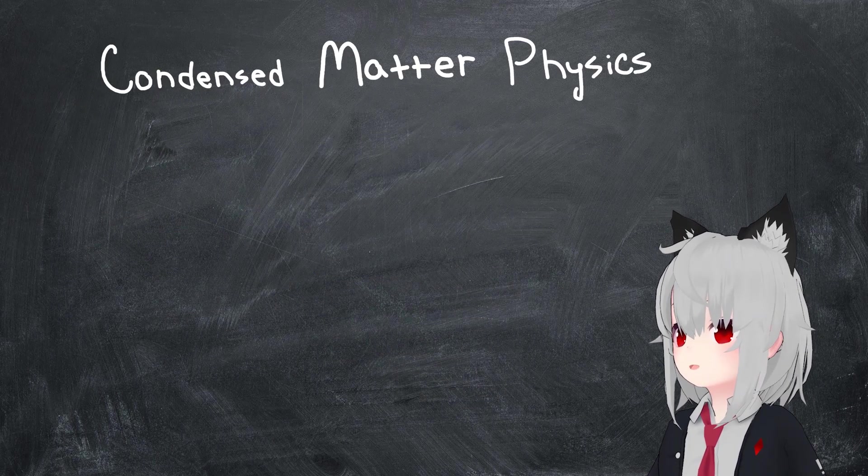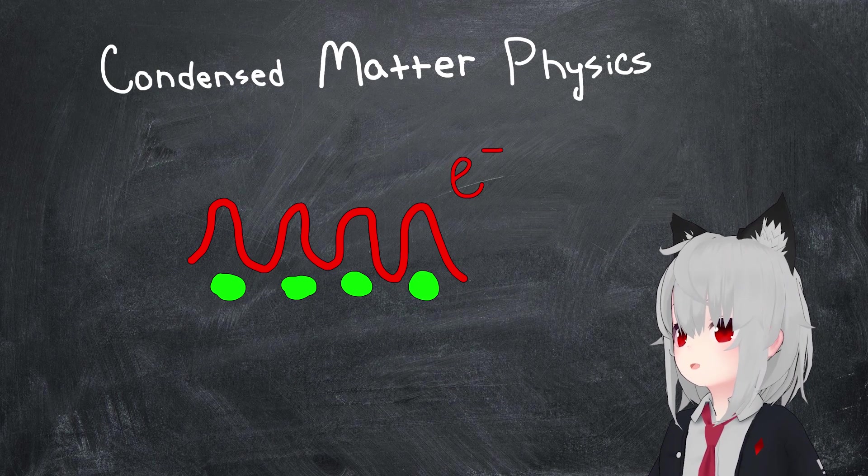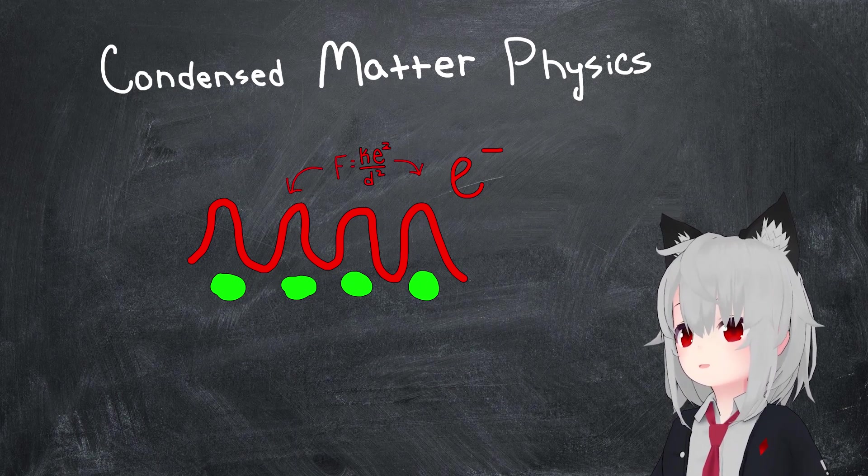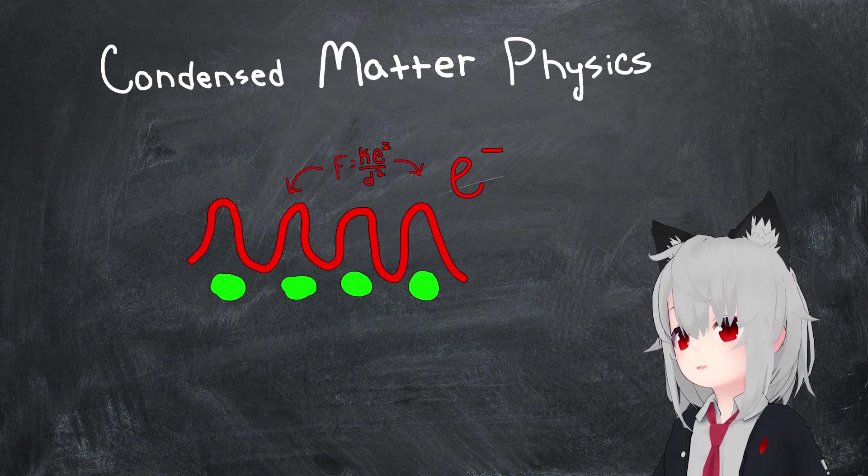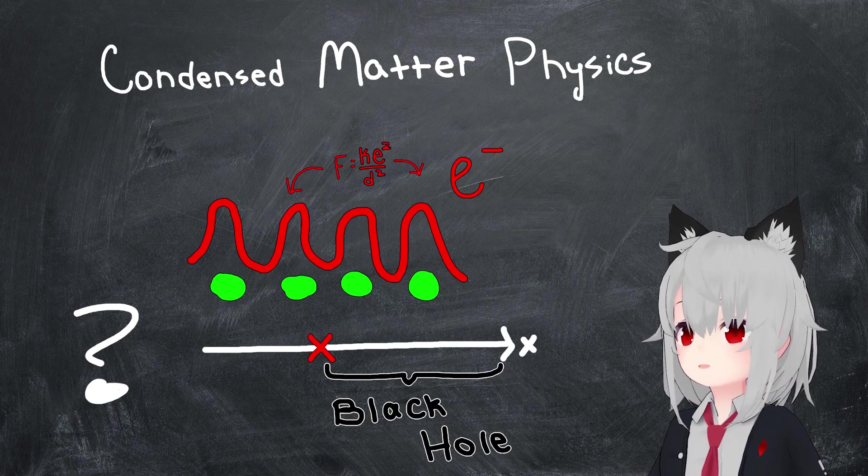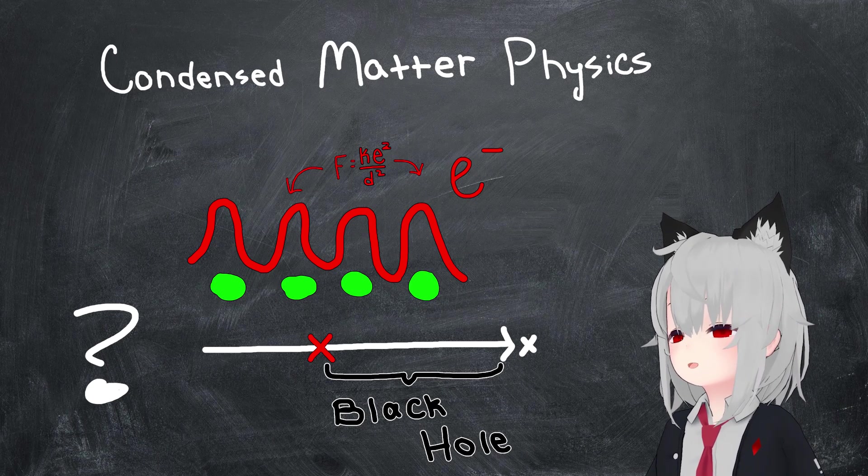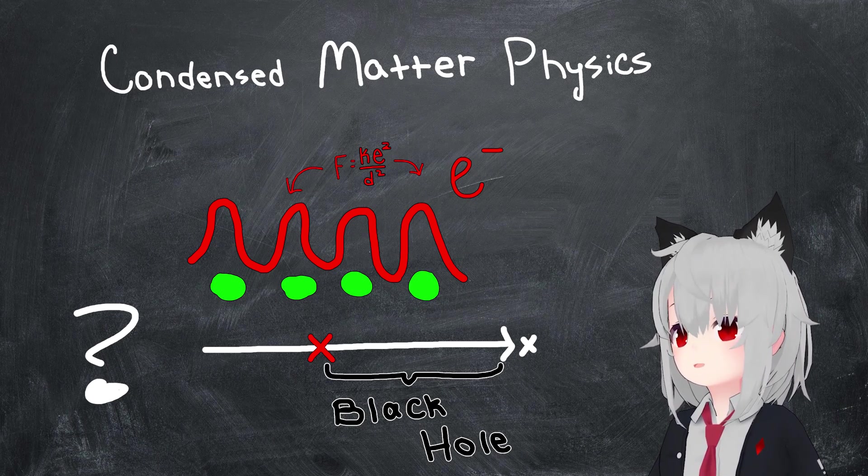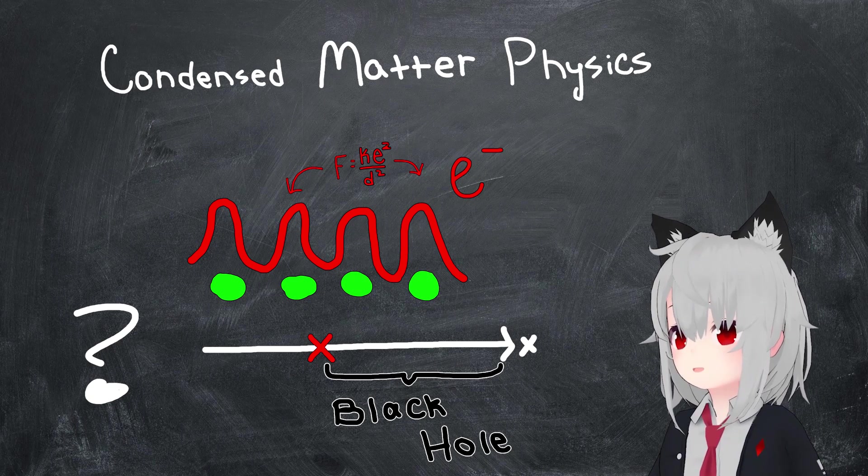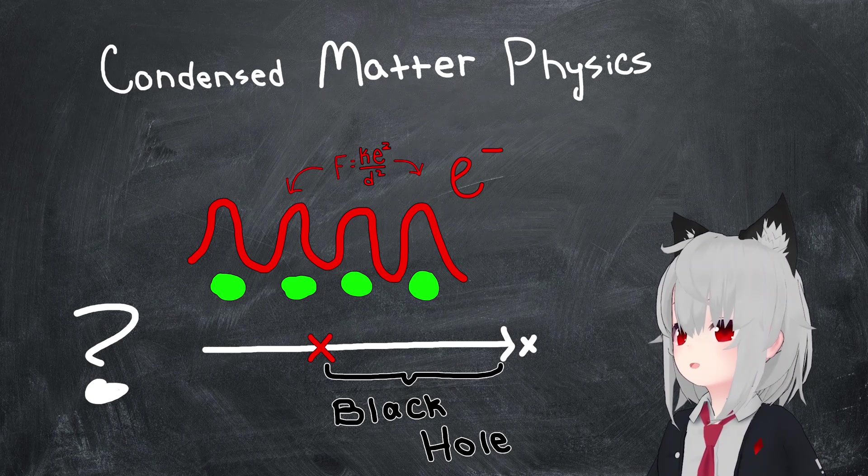However, in condensed matter physics, which studies the physics of closely packed electrons inside crystalline materials, the relevant energy scales are a bit larger, being determined by things like the strong electrostatic interaction. So, if we could fabricate something analogous to a black hole in this context, this could make the detection of Hawking radiation, or at least whatever the analog to it would be, a bit more feasible.